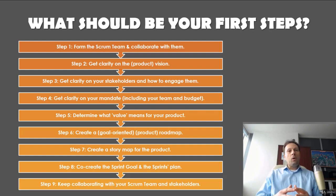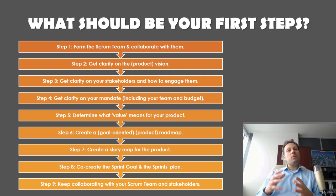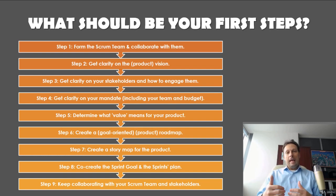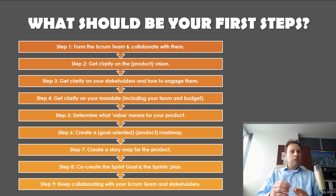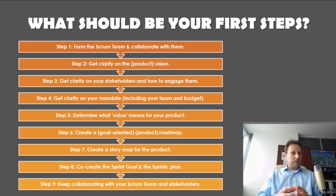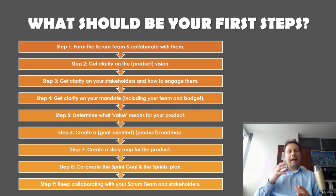Step nine: keep collaborating with your scrum team and stakeholders. While sprinting and regularly delivering done product increments, the most important thing is to keep collaborating. Support developers by hosting refinement sessions, explaining the product vision, goals, roadmap, and product backlog items. Help make items small, clear, and valuable, and support gathering feedback from customers and users. Also keep collaborating with your stakeholders — spend the most time on your most important ones, update your stakeholder map periodically, and make sure you get feedback early and often so you can maximize the value delivered every sprint.